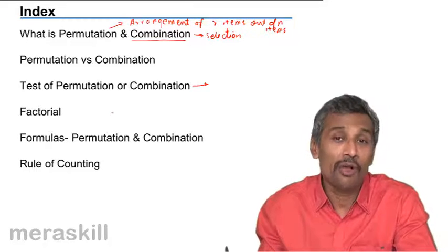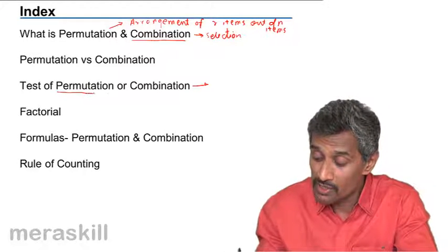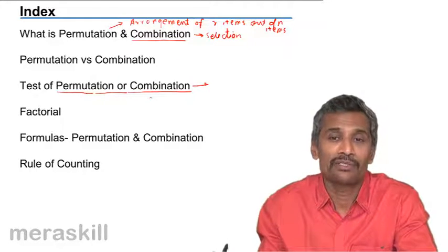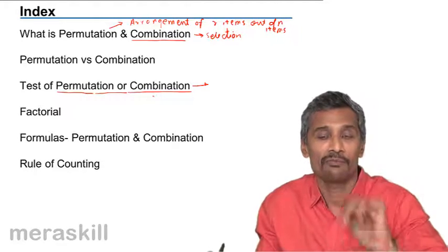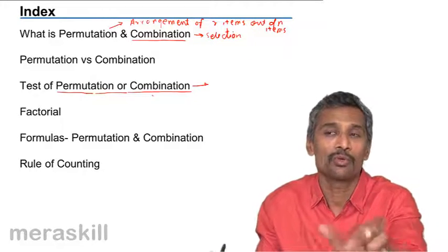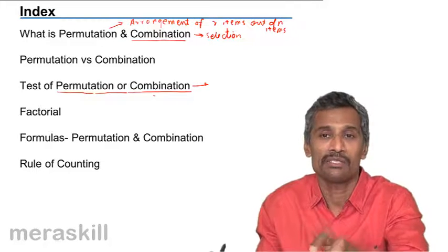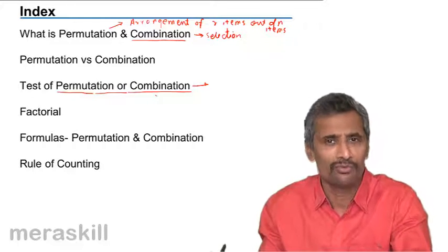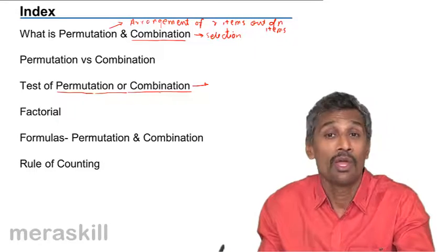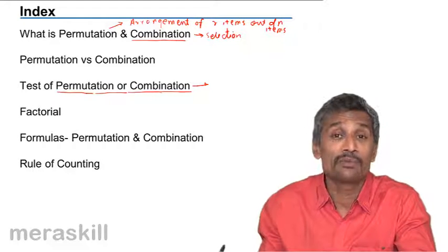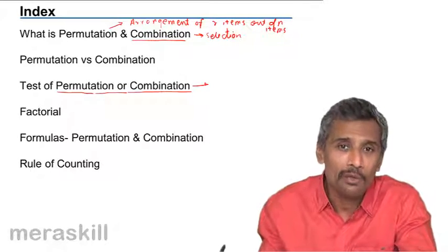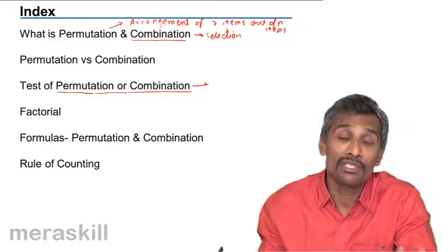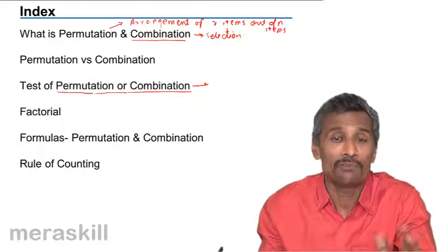This test of permutation or combination is extremely important because whenever you appear for an examination, it's not going to come as a package saying this is a question on permutation, nor will it say it's from exercise 7B or 7C. The basic concepts will be thorough, but your mastery will be seen when a particular problem is presented. You should be able to understand whether this is a permutation or a combination so that you can apply the suitable formula.